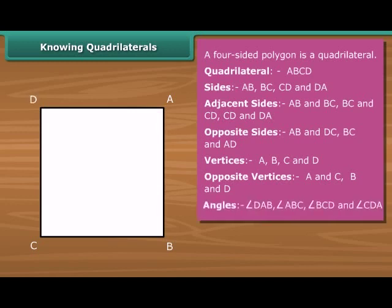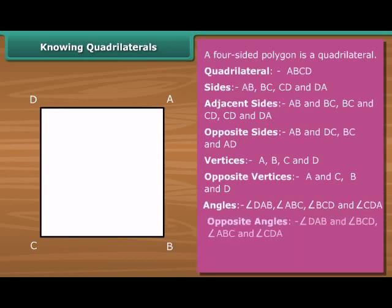The four angles of a quadrilateral are angle ABC, BCD, CDA.